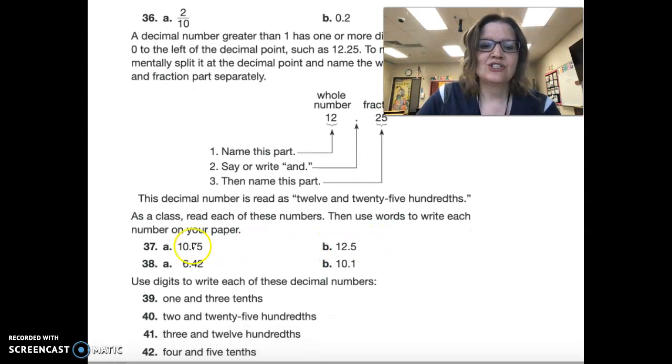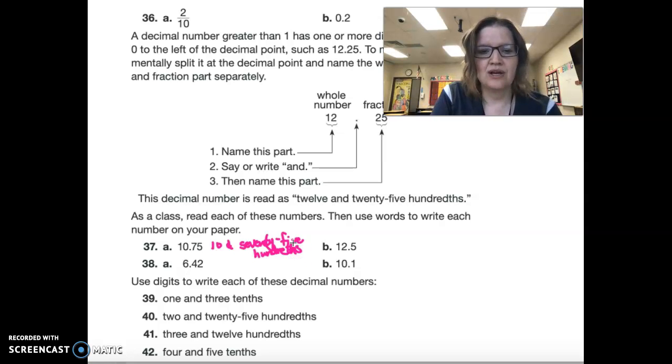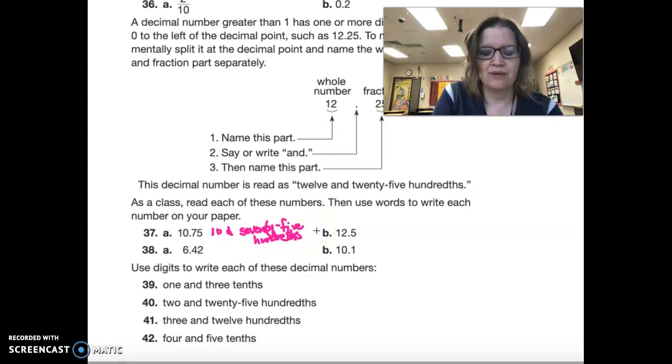Now, let's use words to write each of these numbers on your paper. We're going to say ten. And I'm abbreviating because I'm losing space. Seventy-five. And I'm going to write this hundredths.